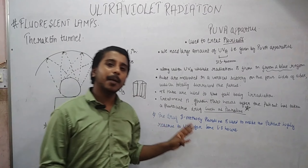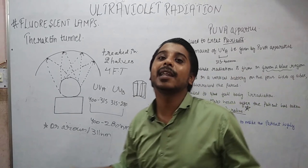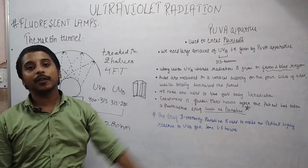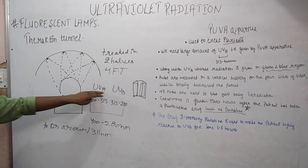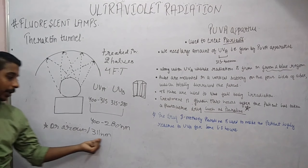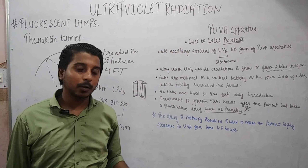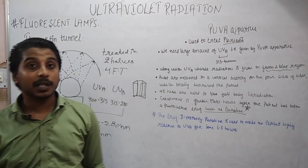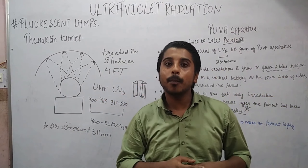So this is about the PUVA apparatus. These two are very easy — you just need to understand the previous part about the fluorescent tube; these two are simply the arrangement of tubes. The theractin tunnel is a semi-cylindrical frame with 4 tubes and reflectors, giving UV output of 400 to 280 nanometers, or only 311 nanometers. The PUVA apparatus requires a psoralen drug taken 2 hours before treatment to make the patient more reactive toward UVA for 6 to 8 hours, and its therapeutic effect is to treat psoriasis.